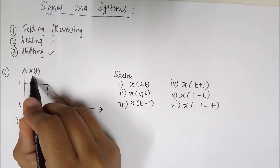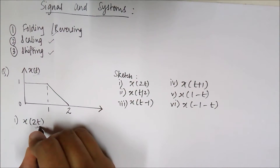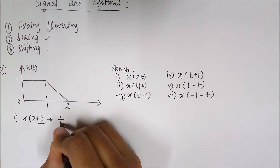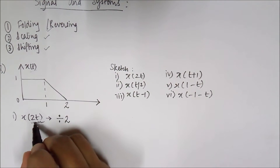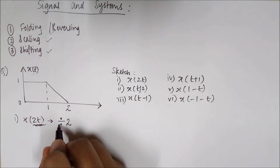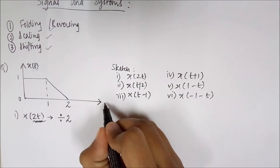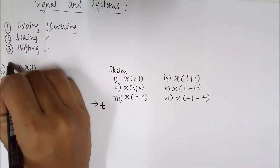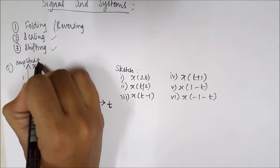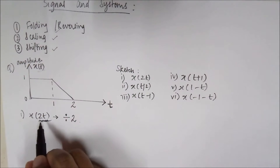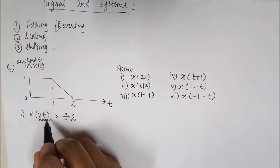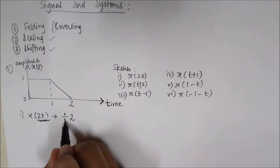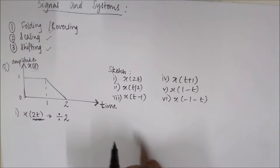The given signal is x(t) and we have to draw x(2t). What we have to do is divide the given signal's time axis values by 2. This axis is the time axis and this axis is the amplitude axis. Whenever we have a value along with t, we perform that operation on the time axis.